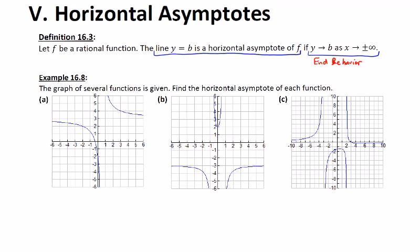So I want to use some graphs as an example to help illustrate how we can find the horizontal asymptote. And then we'll discuss how an equation can be used to find the horizontal asymptote. And then once we know that, we can create the graph for ourselves. So example 16.8 is going to give us a chance to get into this definition a little bit more. It says, the graph of several functions is given. Find the horizontal asymptote of each function.